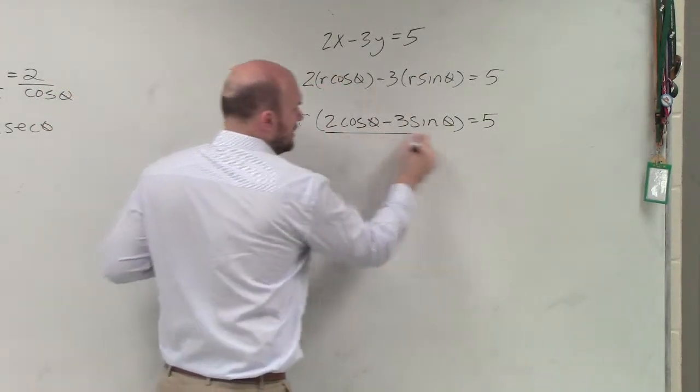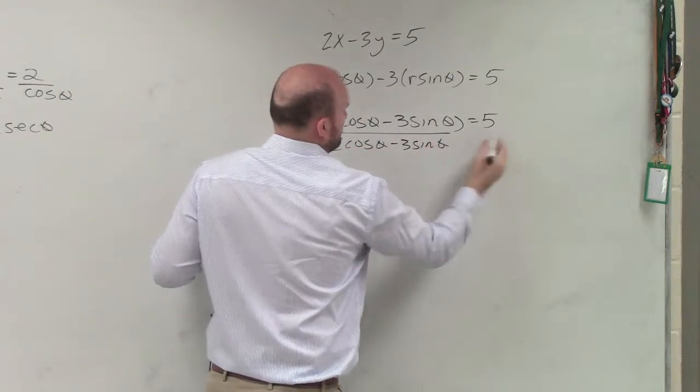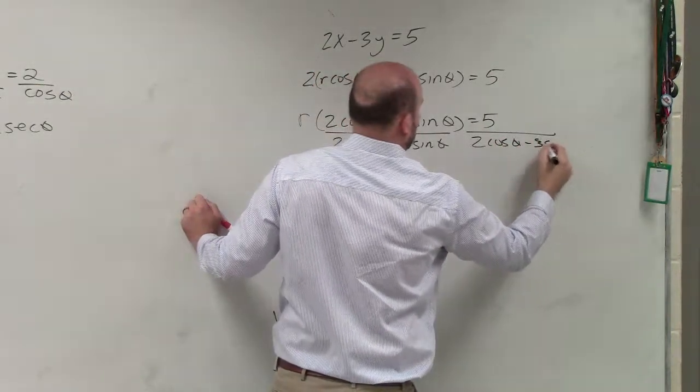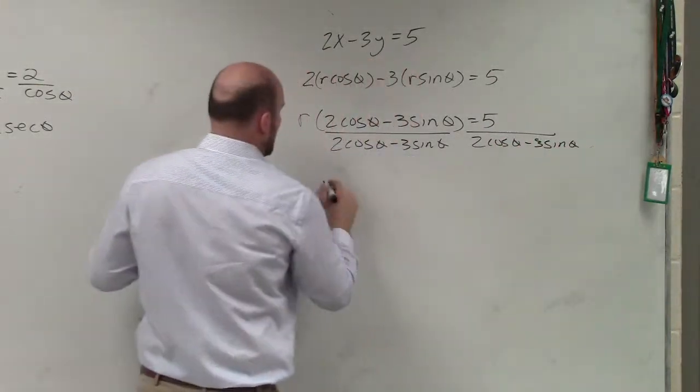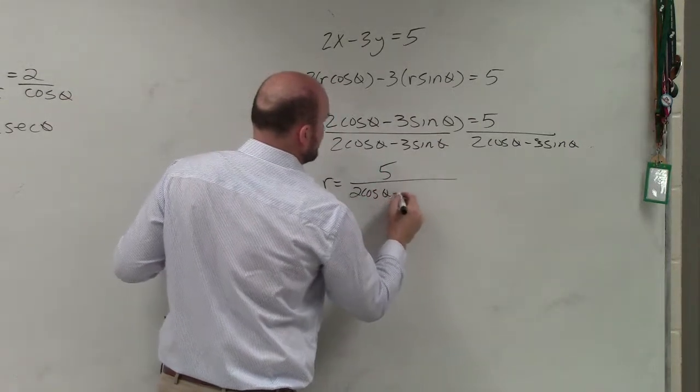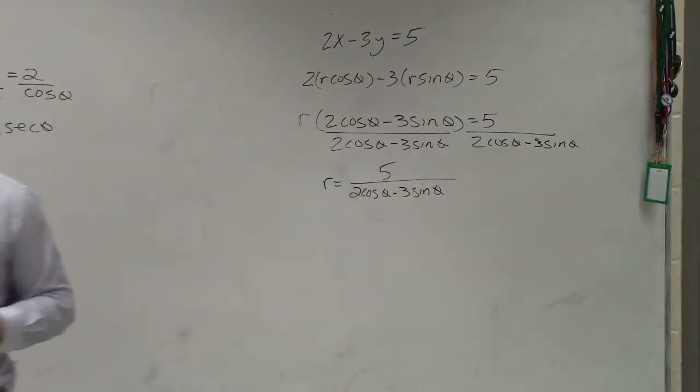Then to solve for r, I just need to divide by this on both sides. So r equals 5 divided by 2*cos(θ) minus 3*sin(θ). Capisce?